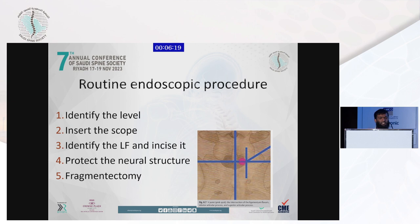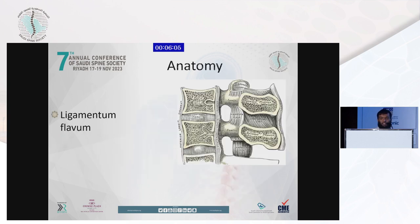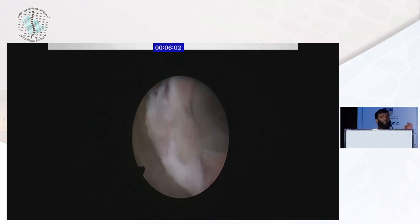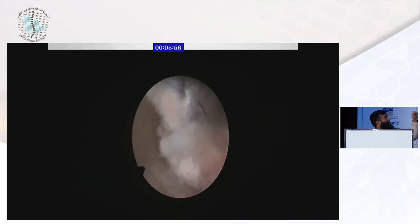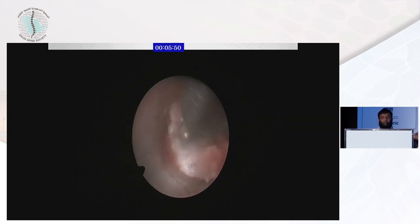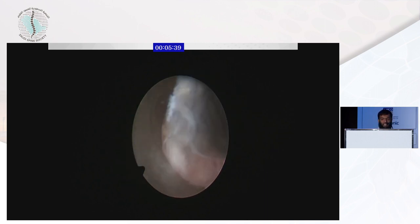Our routine endoscopic procedure is: identify the level, insert the scope, identify the ligamentum flavum, incise it, protect the neural structure, and perform fragmentectomy. This is the main surgery — fragmentectomy. We target the ligamentum flavum, pinpoint and cut it until we find the space. From the space, we go from medial to lateral to incise the ligamentum flavum. We can see there is a hole, and from the hole, I bring the scissor from medial to lateral until I make my channel and go through it.